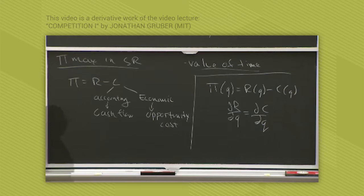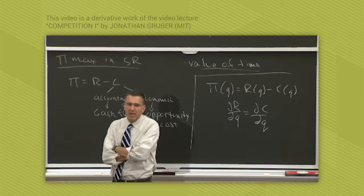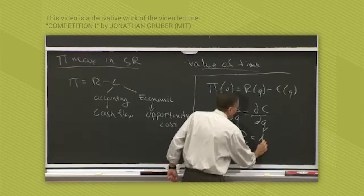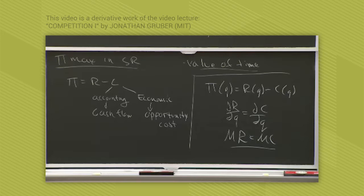Or, to put it in economic terms, where marginal revenue equals marginal cost. The firm will choose to produce a quantity q where its marginal revenue, which is the revenue made from selling the next unit, equals its marginal cost, which is the cost incurred by making the next unit.